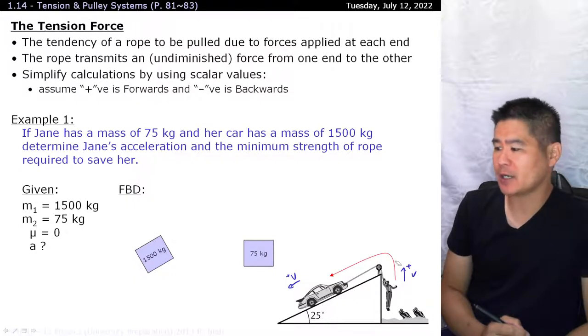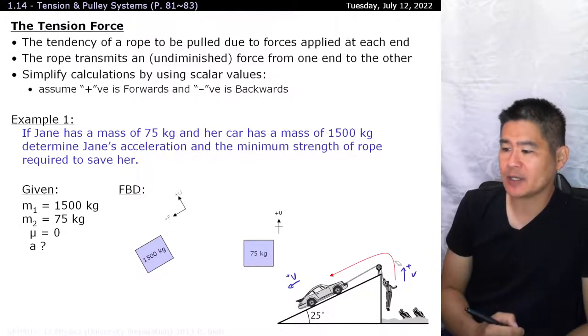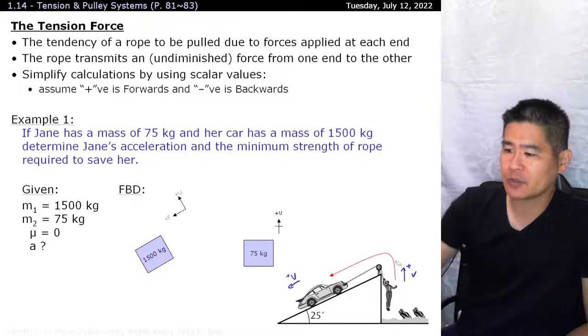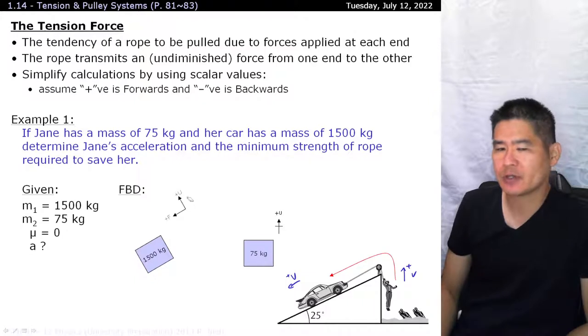Let's start drawing out our free body diagram. As for Jane, we're taking it that upwards is positive. And for the car, as we mentioned, down the ramp is defined as positive. There's also a perpendicular dimension, which we'll treat as positive for now, but it'll net to a value of zero at the end anyways.